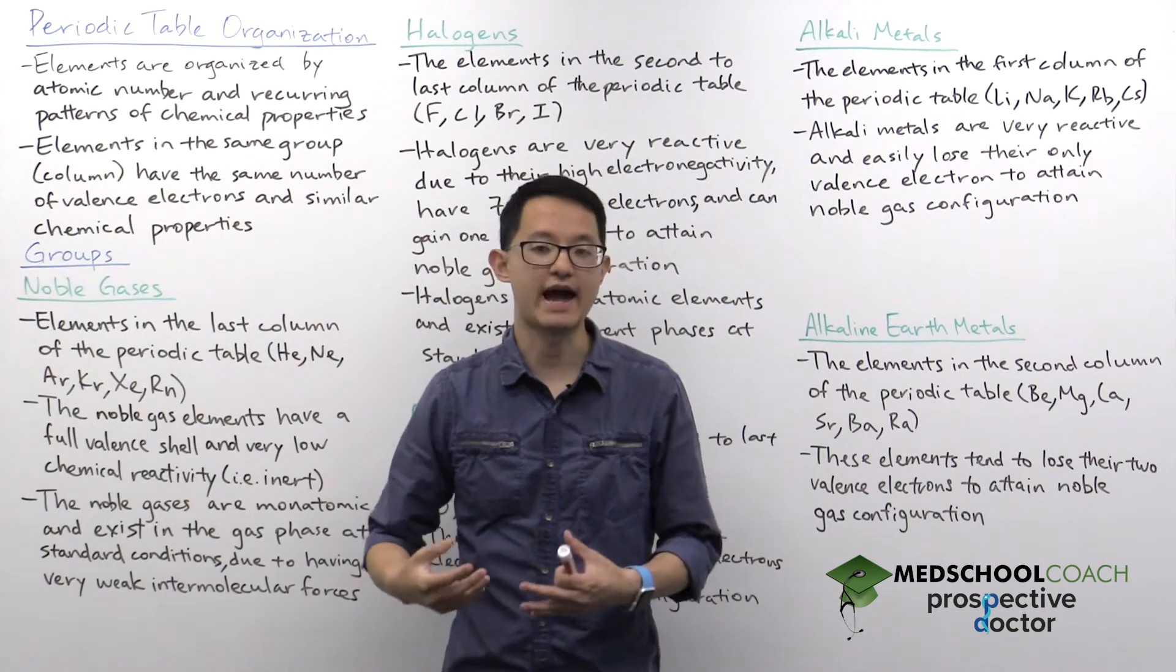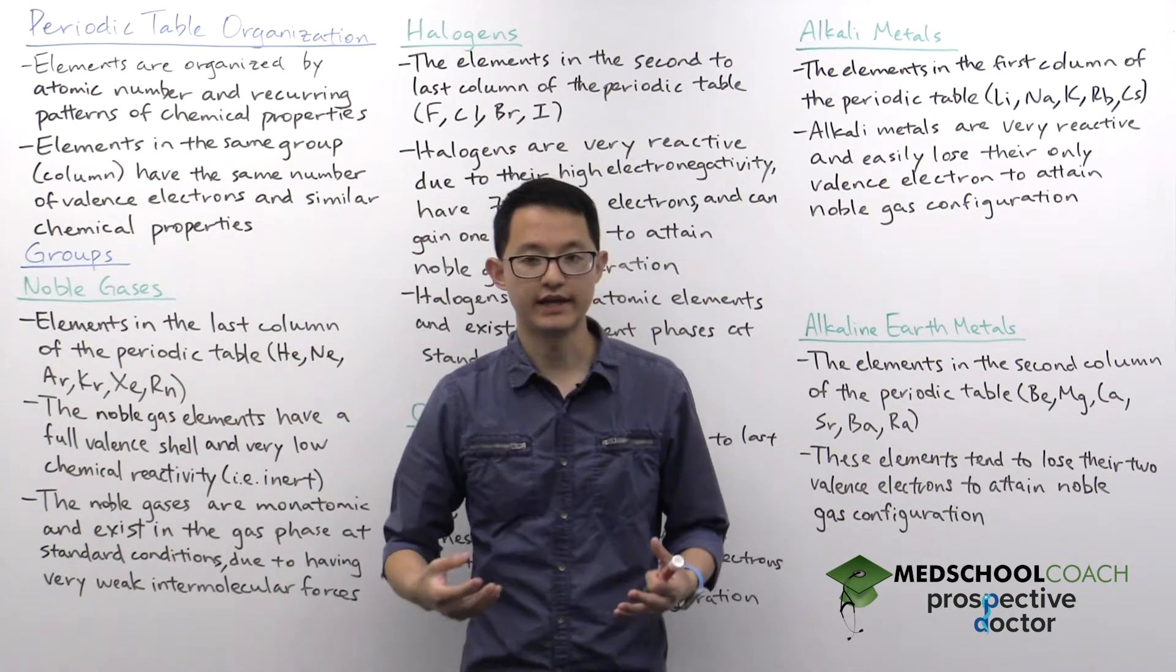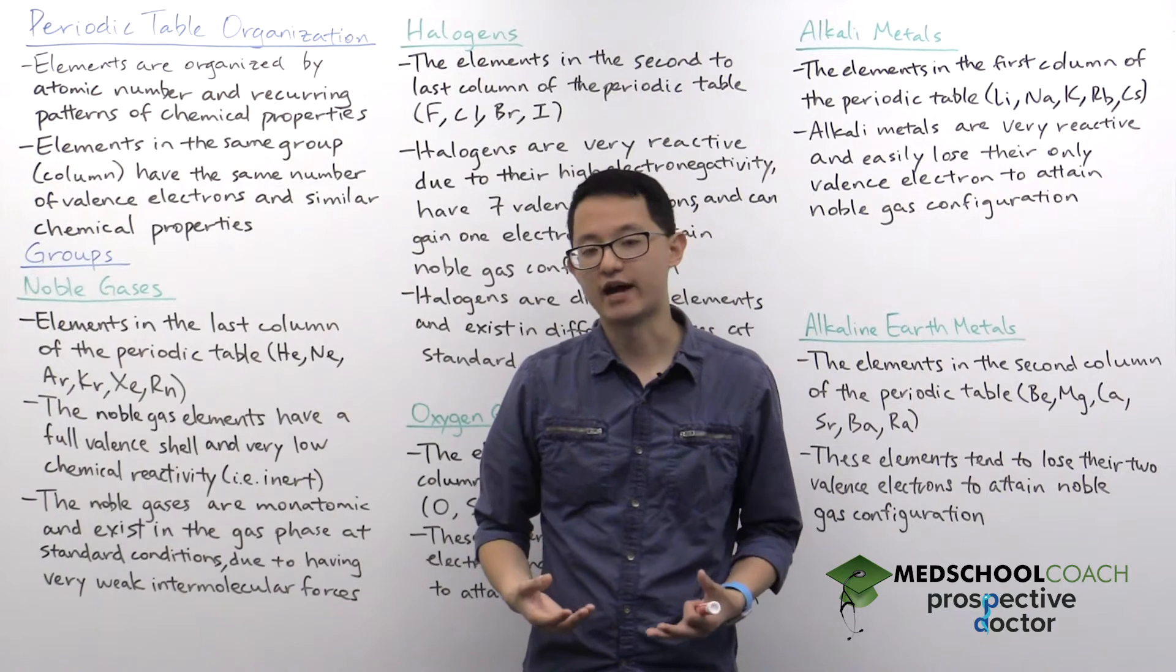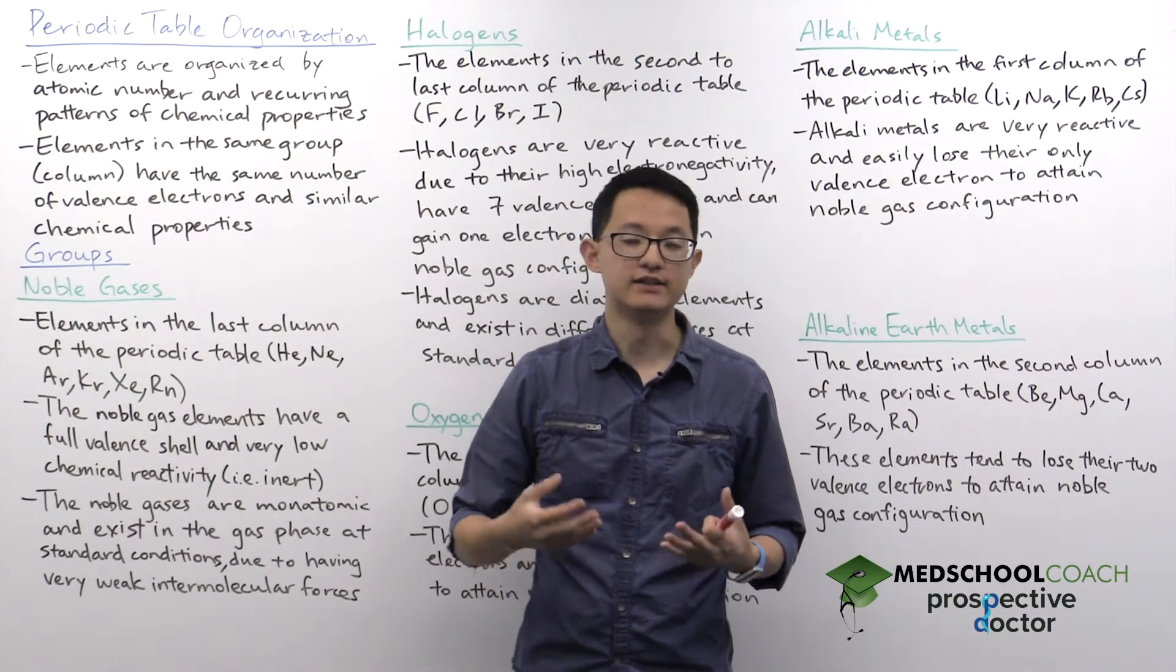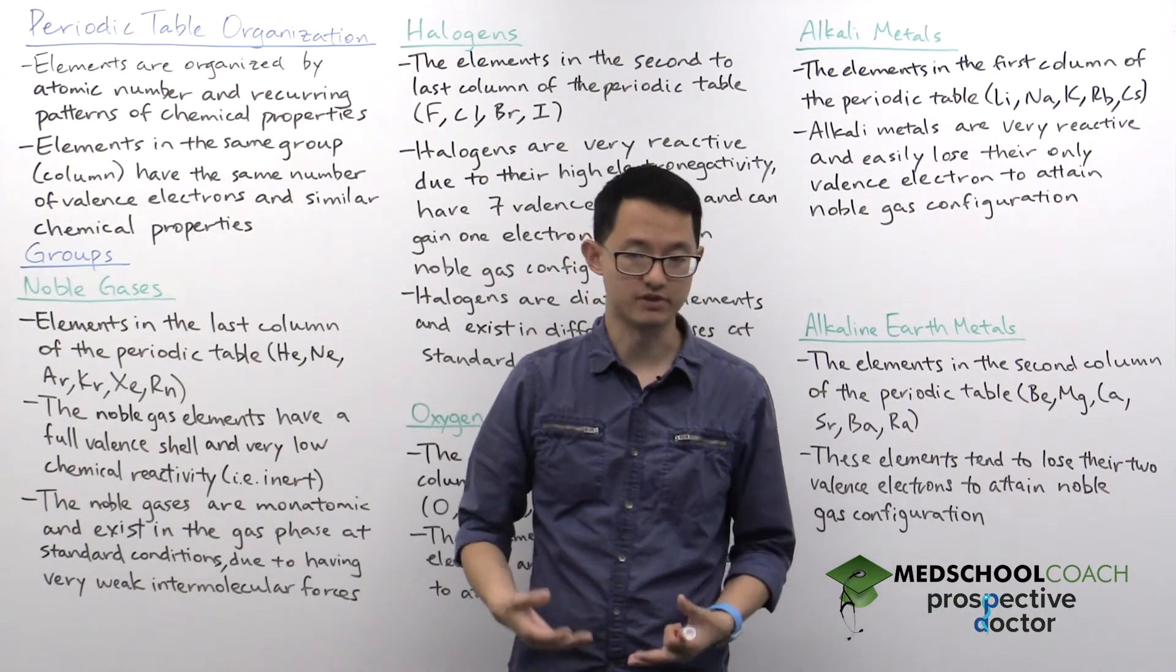the alkali metals, the halogens, and so forth. And all of these trends and patterns we can see in the different groups or columns in the periodic table.